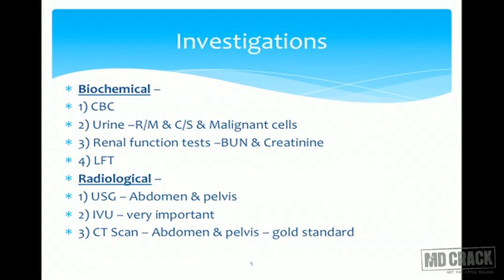Investigations: basic biochemical investigations include CBC. Urine routine and microscopy will show malignant cells, casts, gravels, and hematuria. Culture sensitivity will detect concomitant infection in the kidney, and cytology of the urine will show malignant cells. Renal function tests: if the tumor is small, there will be no compromise, but if larger, there will be some renal failure evident. One also needs to understand that this tumor metastasizes to the liver, so liver function tests should also be assessed.